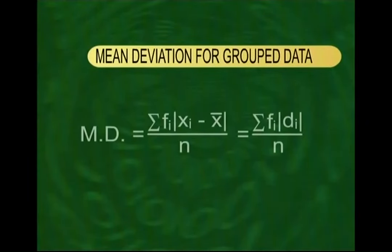The formula for mean deviation with raw data is simply the sum of the absolute deviations divided by the number of observations. For grouped data with a frequency distribution, the formula is sigma f times modulus of d, divided by n.